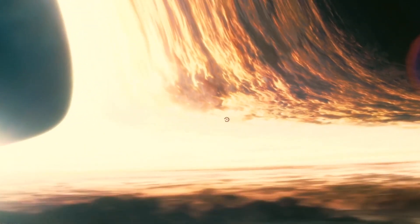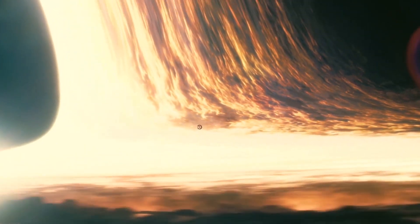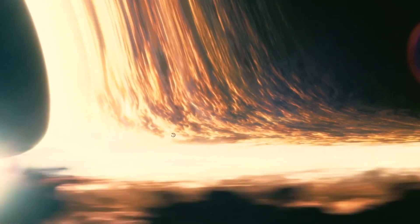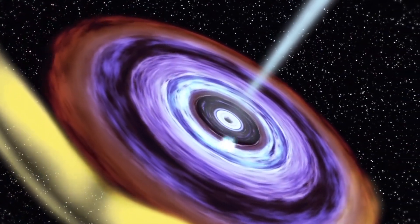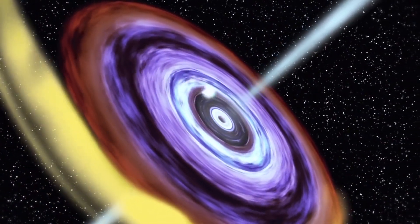At its closest approach, S2, the star orbiting Sag A the closest, accelerates to 11 million miles per hour. Its year, or the length of time it takes to complete one circle of Sagittarius A, is 15 Earth years. Its orbit brings it within 120 times the distance between the sun and earth from the black hole.